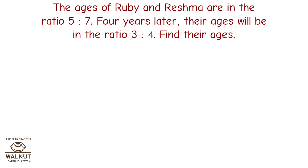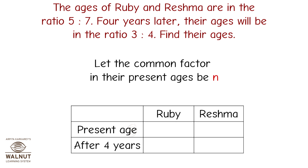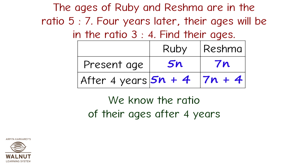Let's take a look at another word problem. The ages of Ruby and Reshma are in the ratio 5 is to 7. Four years later their ages will be in the ratio 3 is to 4. Find their ages. Let the common factor in their present ages be n. Ruby's present age is 5n and Reshma's present age is 7n. After 4 years, Ruby will be 5n plus 4 and Reshma will be 7n plus 4. So 5n plus 4 divided by 7n plus 4 equals 3 upon 4.